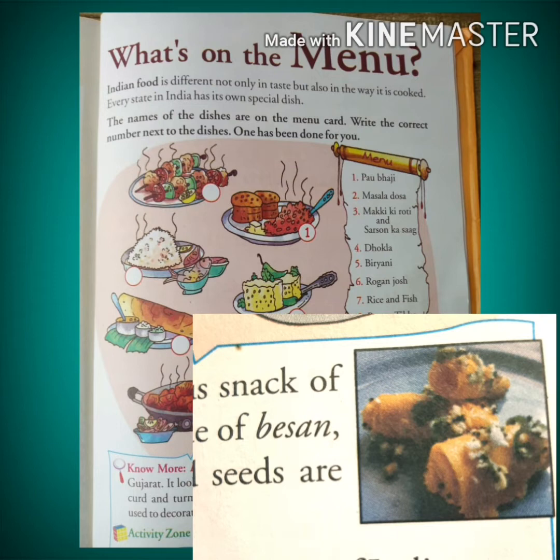Khandvi is made of besan, curd and turmeric, and is garnished with coconut and mustard seeds for decoration. It looks good and tastes yummy. So children, do have a try at this Gujarati dish.